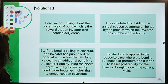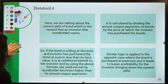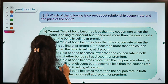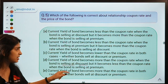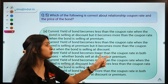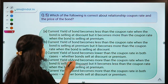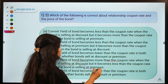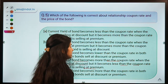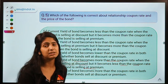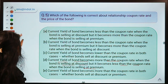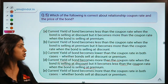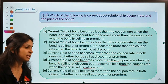Therefore, option D is correct: the current yield of a bond becomes more than the coupon rate when the bond is selling at a discount, and becomes less than the coupon rate when the bond is selling at a premium. The investor buying at a discount benefits from both the lower purchase price and the coupon payment, resulting in a higher effective yield.